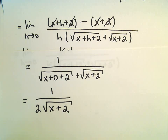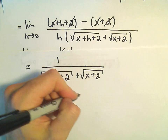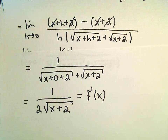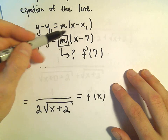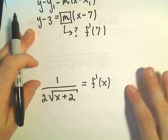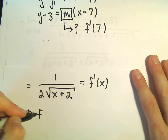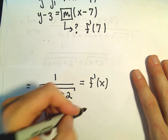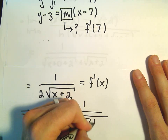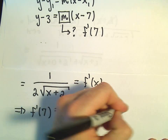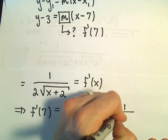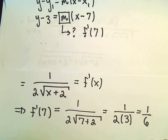Plugging in h equals 0, we get 1 over the square root of x plus 2 plus the square root of x plus 2, which is 1 over 2 times the square root of x plus 2 — that's our derivative. To find the slope at x equals 7, we compute f′(7): 7 plus 2 is 9, the square root of 9 is 3, so we get 1 over 6 as our slope.